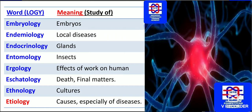The study of insects is known as entomology. The study of effects of work on humans is known as ergology — ergonomics means work-related things. The study of death and final matters is known as eschatology. The study of culture is known as ethnology. The study of causes, especially of diseases, is known as etiology.